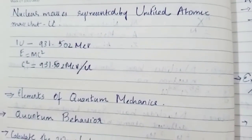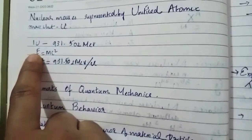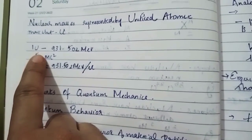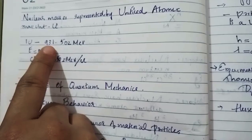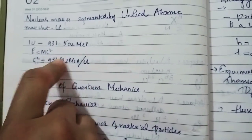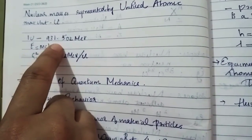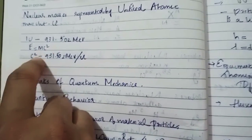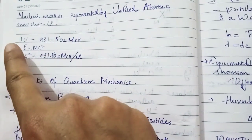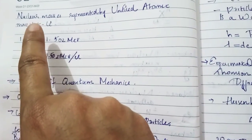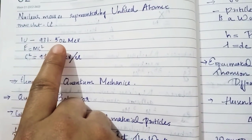Then nuclear masses. Nuclear masses are represented by a unified atomic mass unit U. We have the relation that 1 U, the unified atomic mass unit, is equal to 931.502 MeV. How do we relate mass and energy? We know Einstein's mass-energy relation E equals mc squared, and c squared is equal to 931.502 MeV divided by U. So from that, 1 U equals 931.502 MeV.